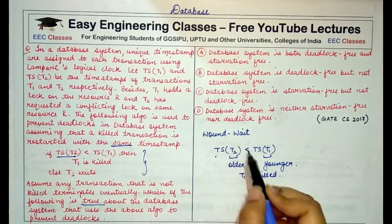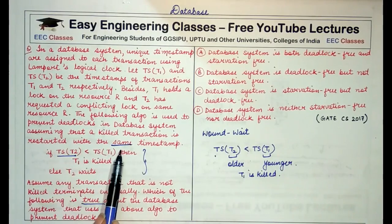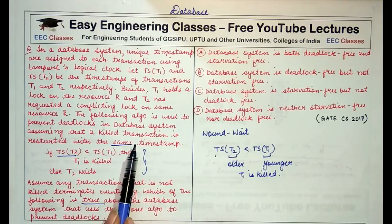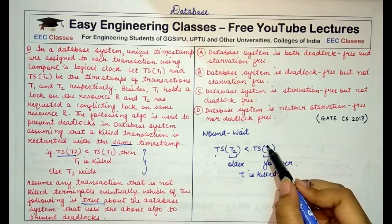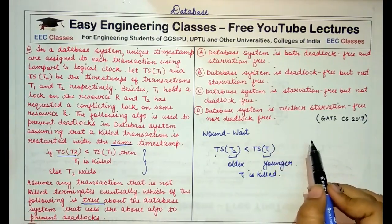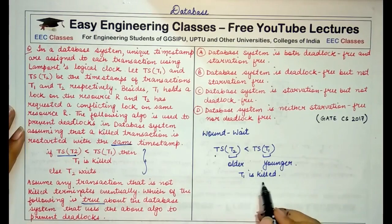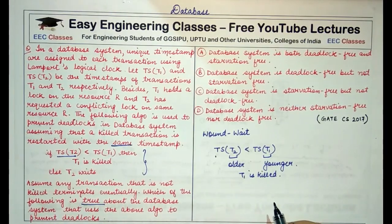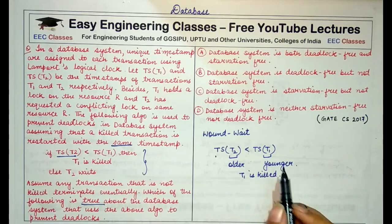Every time the younger transaction T1 is killed if it is fighting with the older transaction for the same resource. When T1 is killed and restarted, the important thing is that it is restarted with the same timestamp. So when T1 asks for the same resource again, it will not be stopped — because at that time T1 would become older compared to other transactions that have been loaded into the system after T1.